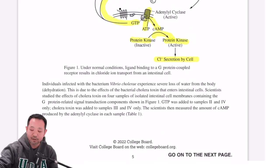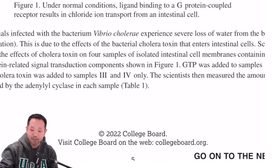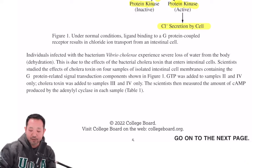Now let's take a look at how they're going to incorporate this into something that's kind of interesting here. It says individuals infected with the bacterium Vibrio cholerae experience severe loss of water from the body, dehydration. Now they say dehydration, but this is really diarrhea. This is due to the effects of bacterial cholera toxin that enters intestinal cells. Scientists study the effects of cholera toxin on four samples of isolated intestinal cell membranes containing the G-protein-related signal transduction components shown in figure one.